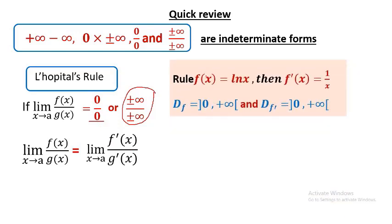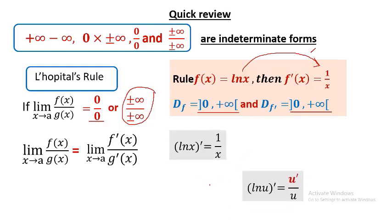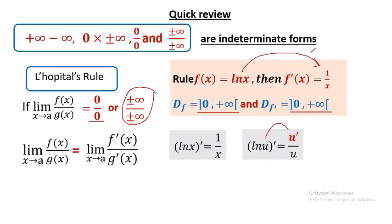The function ln x is defined and continuous on the positive interval (0, +∞), and is differentiable over the open interval (0, +∞). The derivative of ln x equals 1 over x, and the derivative of ln u, where u is a differentiable function of x, equals u′ over u.